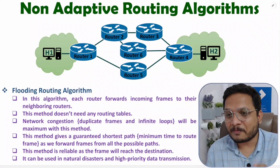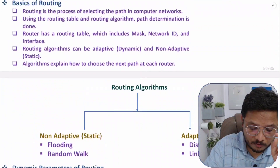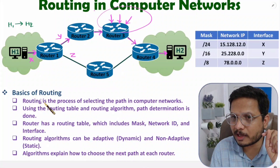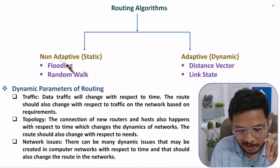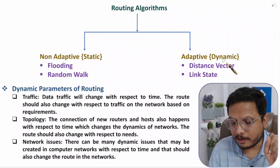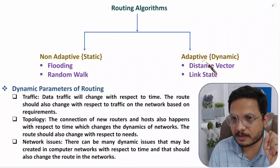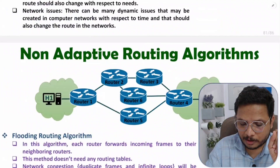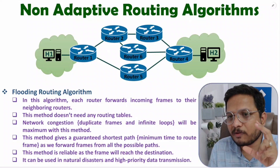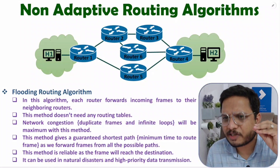Hello friends, welcome to Engineering Funda. In this video I'm going to explain non-adaptive routing algorithms. In my last video I explained the basics of routing algorithms and we discussed how many categories exist. In general, two categories are there: non-adaptive and adaptive. Non-adaptive comes under static routing algorithm and adaptive comes under dynamic routing algorithm. Non-adaptive means the algorithm will not change with respect to situation — it will remain static, it will be fixed.